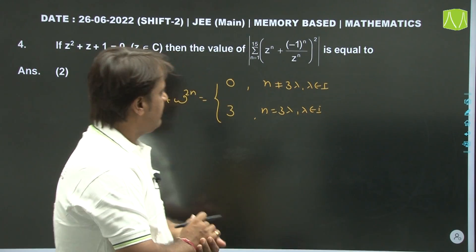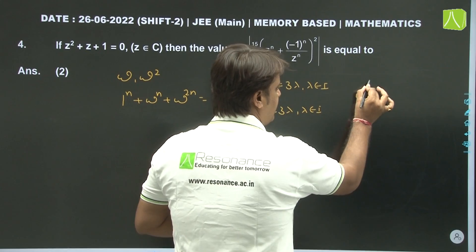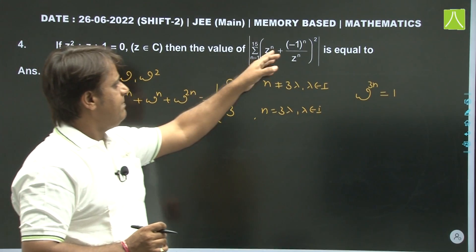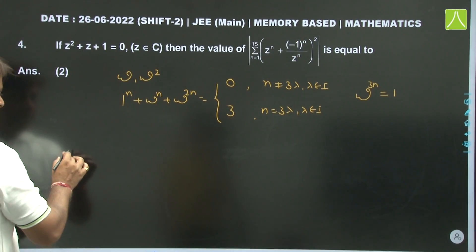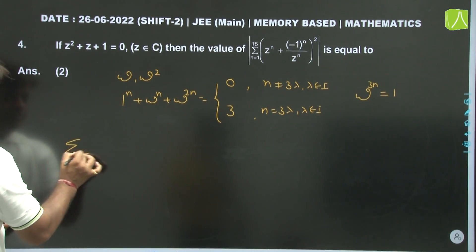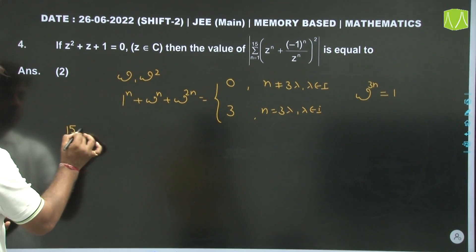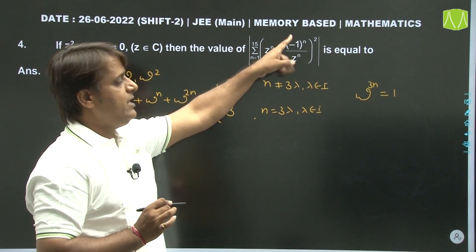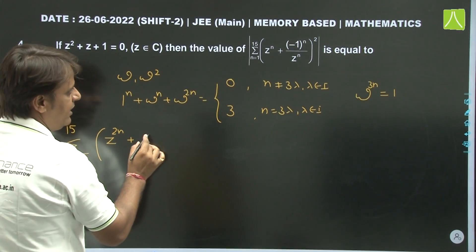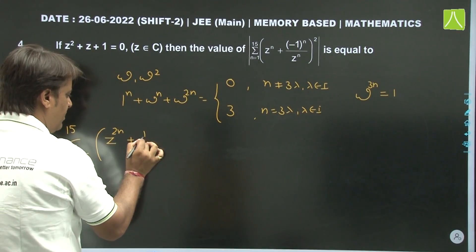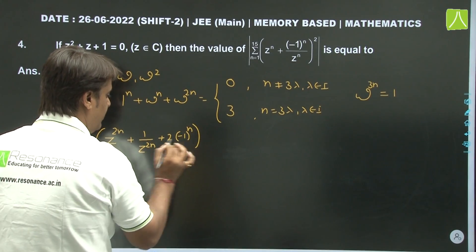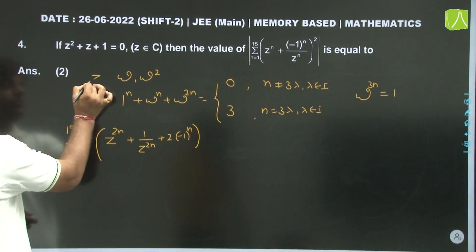Ab is expression ko simplify karna hai. Omega cube = 1, yah bhi maalum hai. The expression involves summation from n=1 to 15. Simplifying (a+b)² type terms, we get: summation of z^(2n) + 1/z^(2n) + 2×(-1)ⁿ from n=1 to 15. Taking z = ω, since 1/ω² = ω.